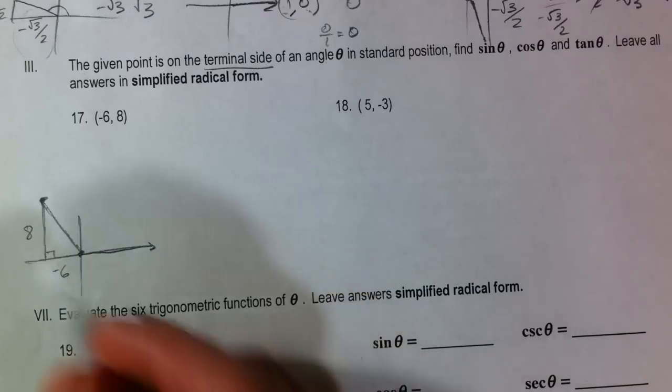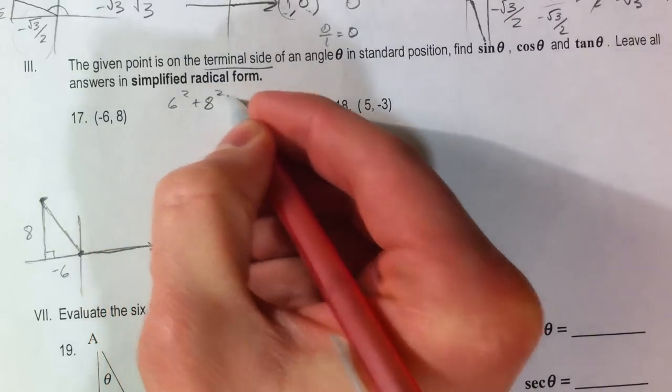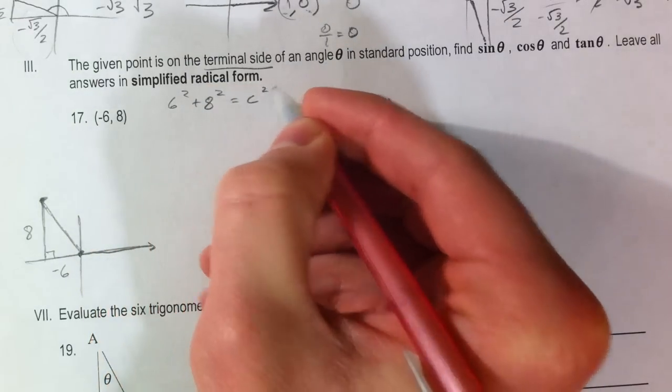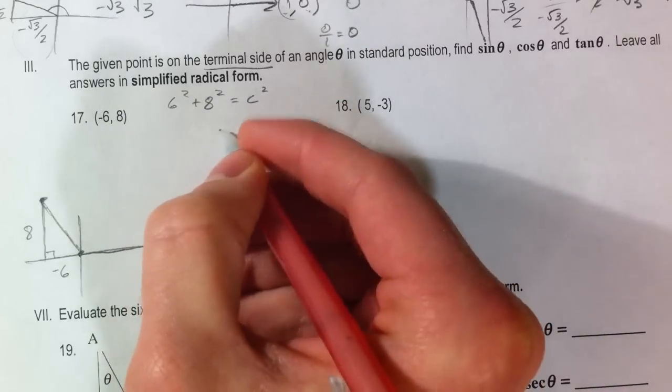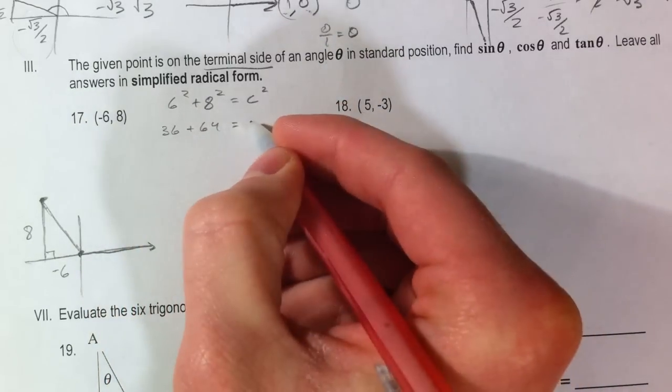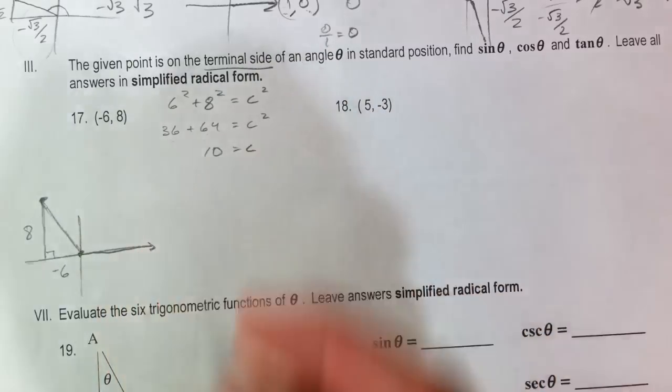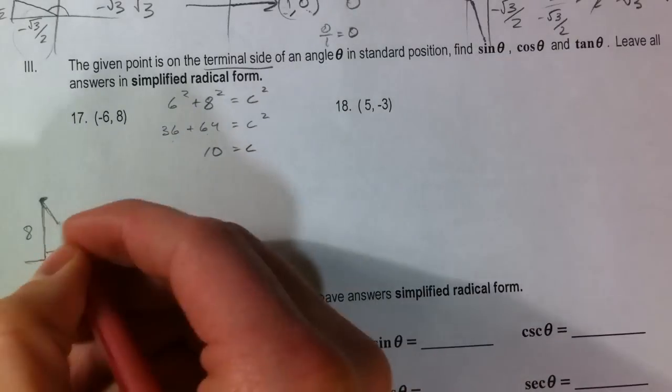So use Pythagorean theorem to find this leftover side. 6 squared, 8 squared, equals c squared. Or in our case, r squared. So 36, 64. And so c is going to be 10 because 36 and 64 make 100. So c is 10.